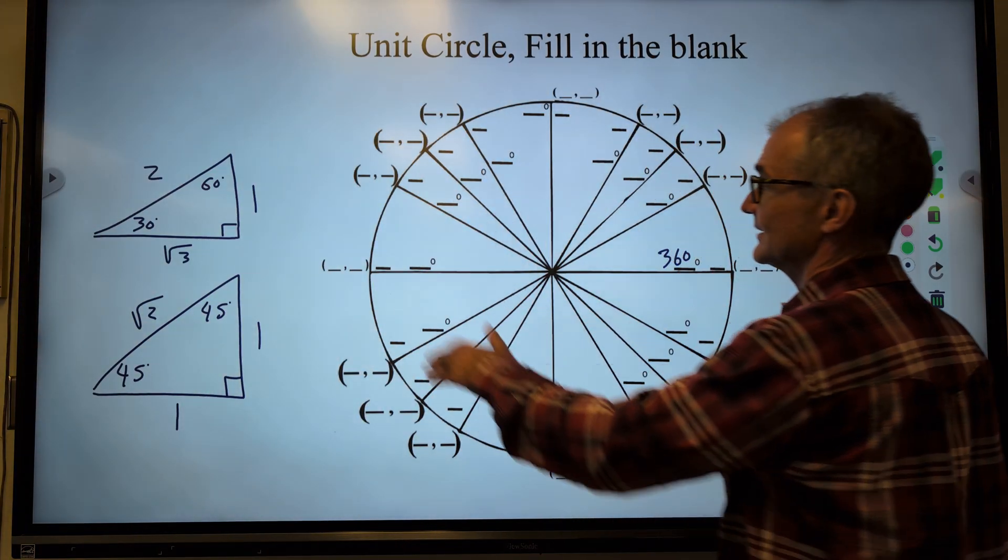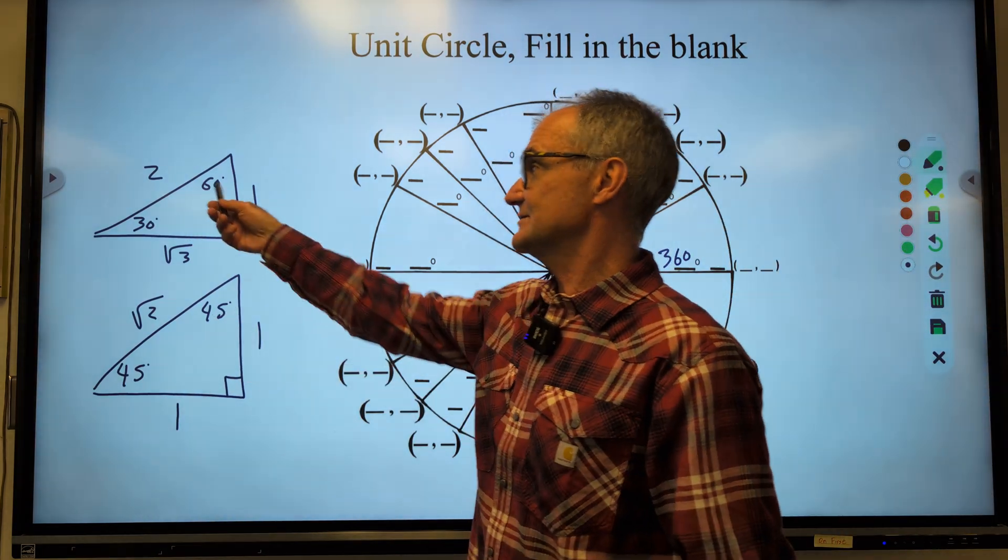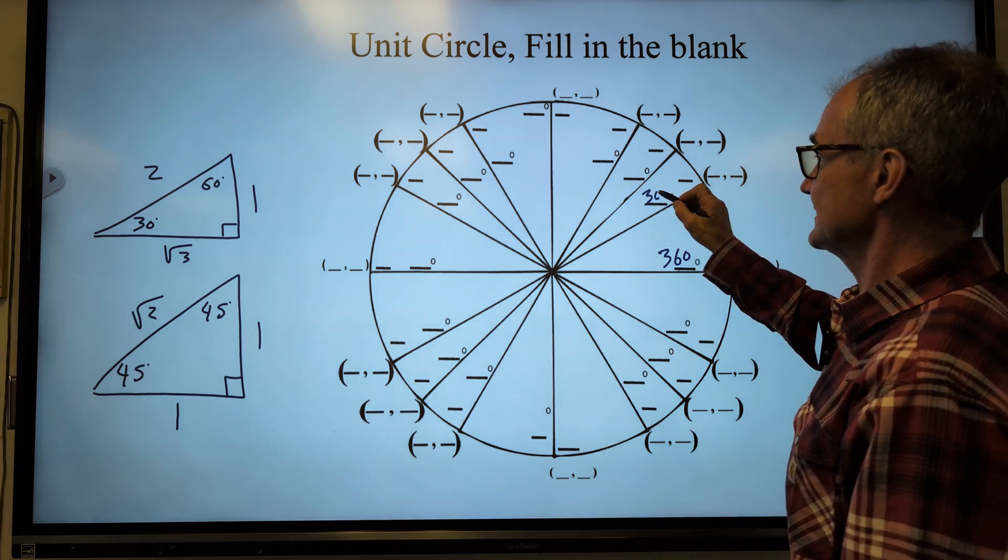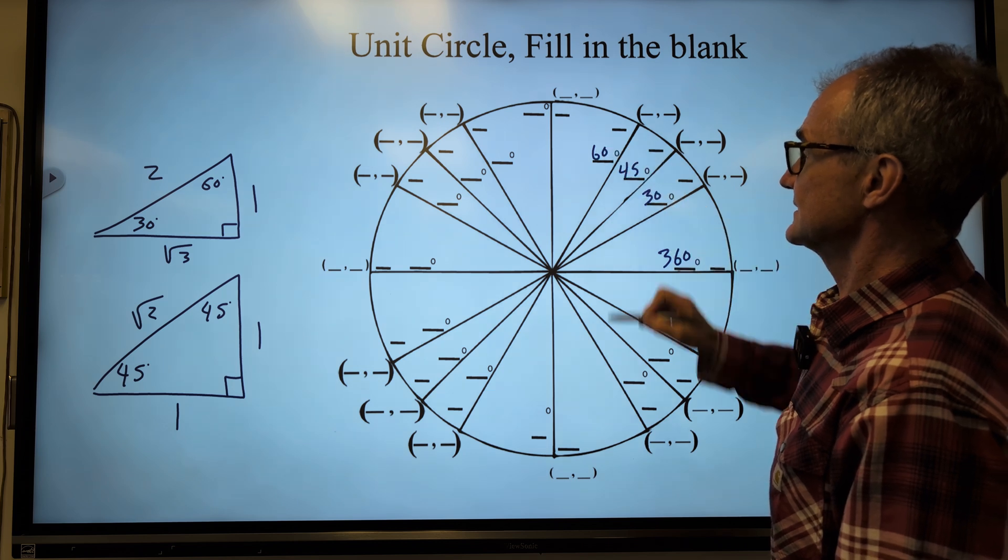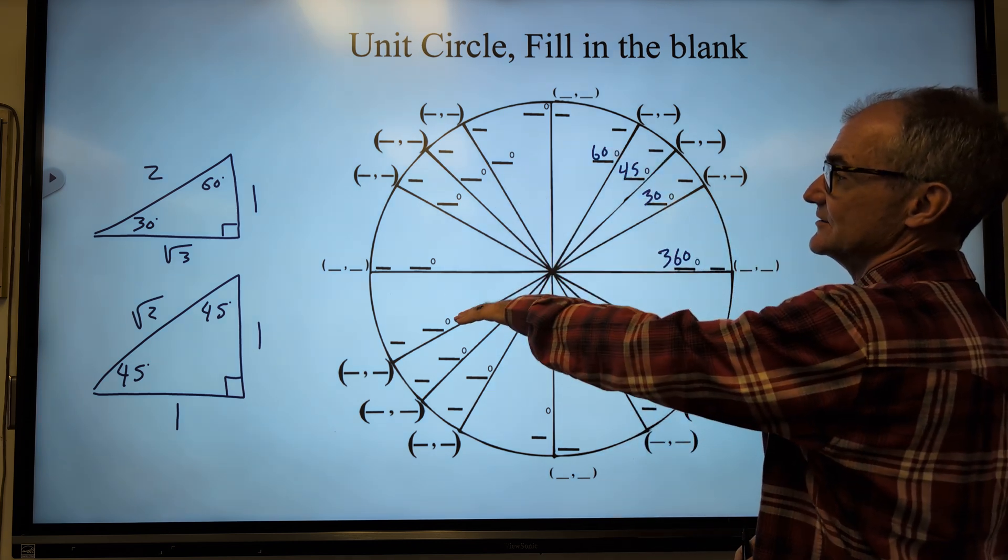And as I go around here, I'm just going to really use my 30, 45, and 60s, and also my 90s. So this first one is 30. This one is 45. This one is 60. And then I'm still using those same angles just in the other quadrants.